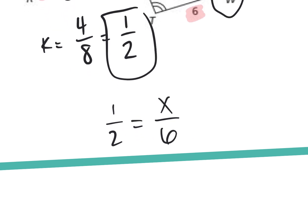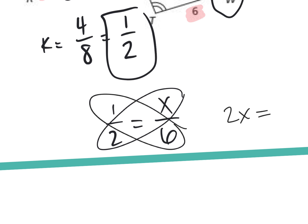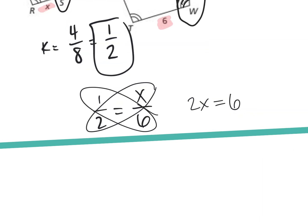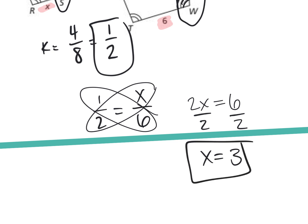Whichever one you made your numerator, be consistent. What do I do from here — can I solve this, Gabby? How would you solve it? Equals six. Solve it. X equals three.